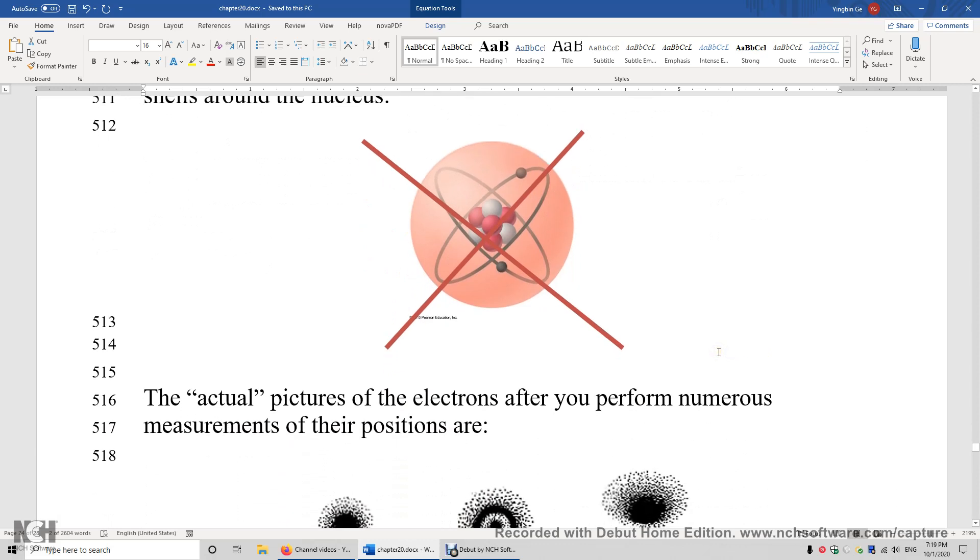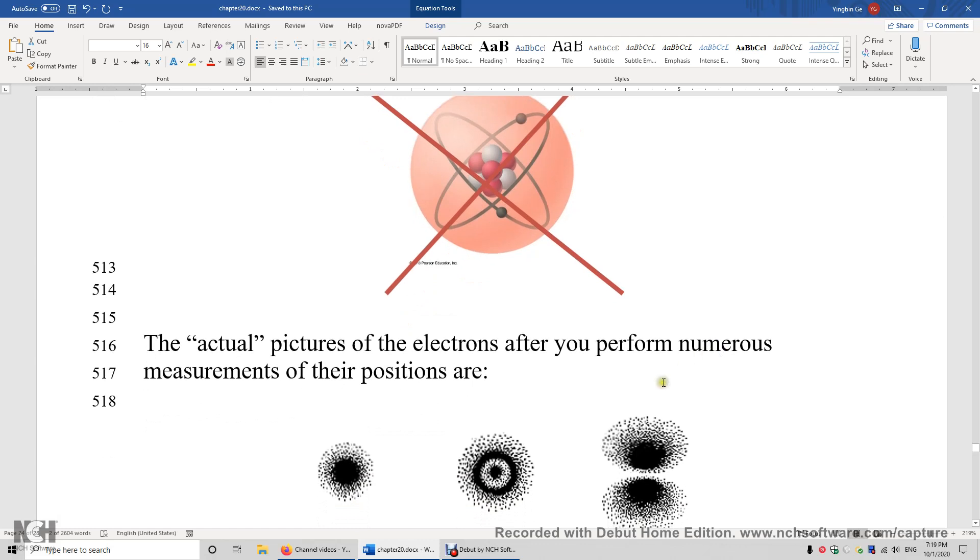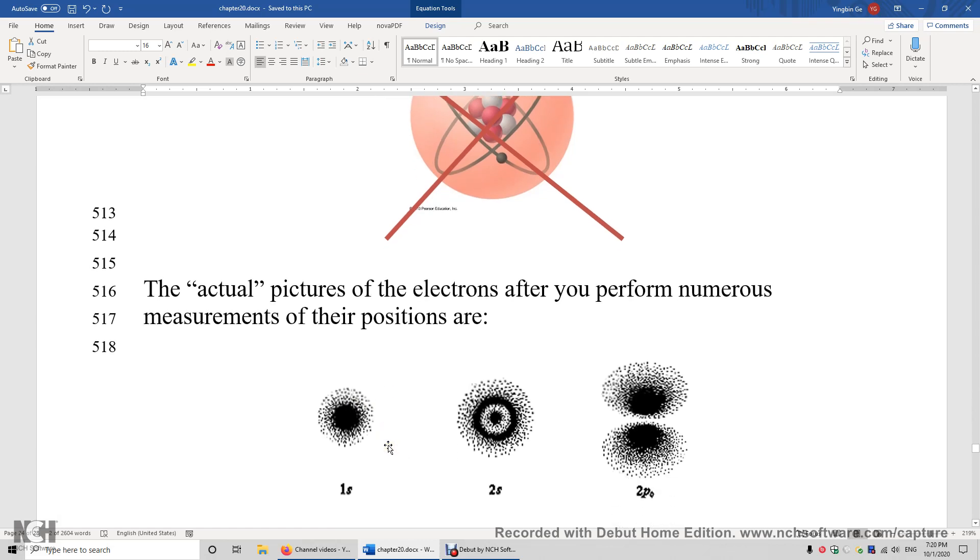Let me show you the real picture of the 1s electron in the hydrogen atom. So over here, imagine you take 1,000 photos for 1,000 different hydrogen atoms. In each hydrogen atom, you have a 1s electron. And you put the negatives of these 1,000 photos together. And if you superimpose the negatives together, you have this 1s orbital. So this is the actual picture of the 1s electron.